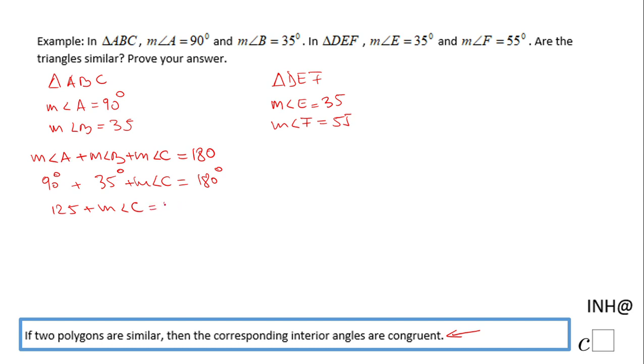The last step to find the measure of angle C is to subtract 125 from both sides, and we get the measure of angle C is 55 degrees. This is the third angle of triangle ABC.